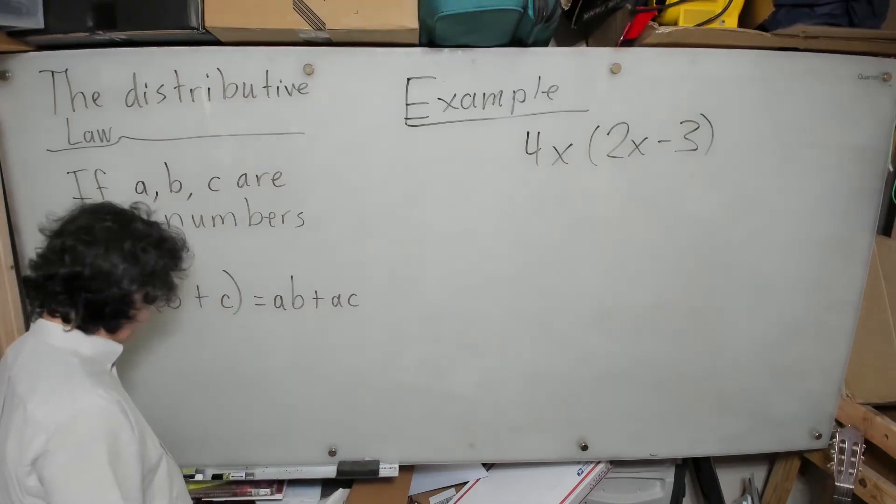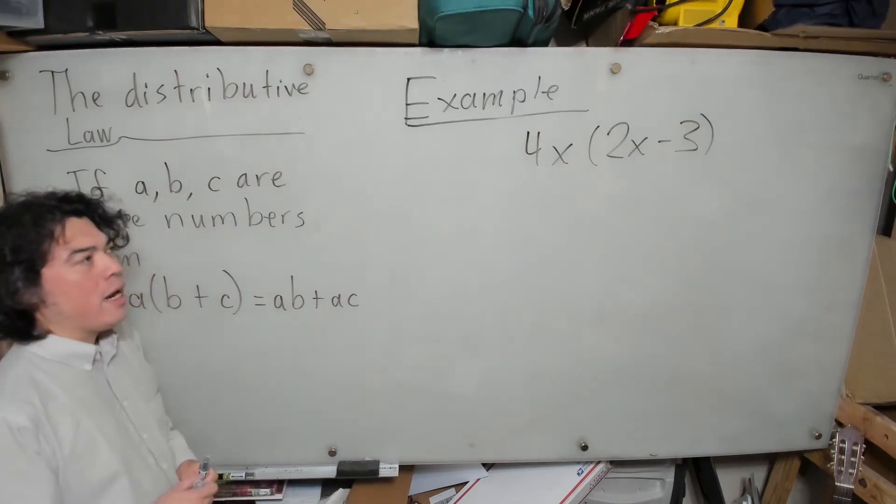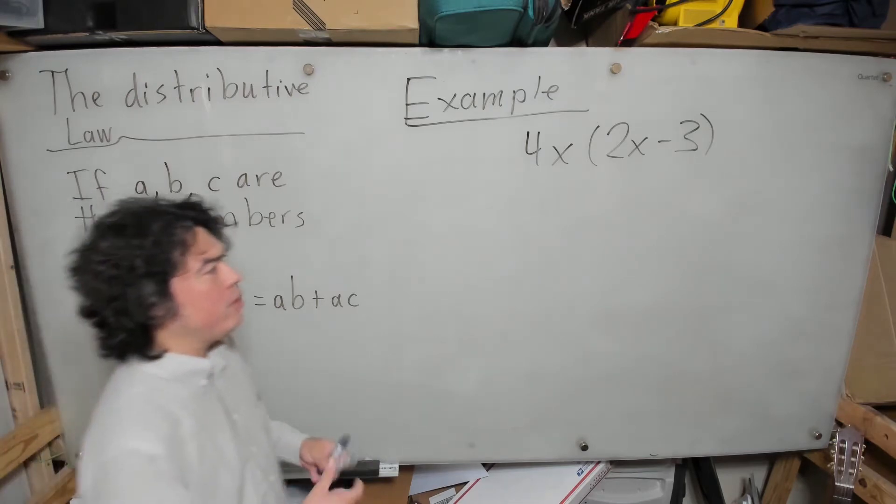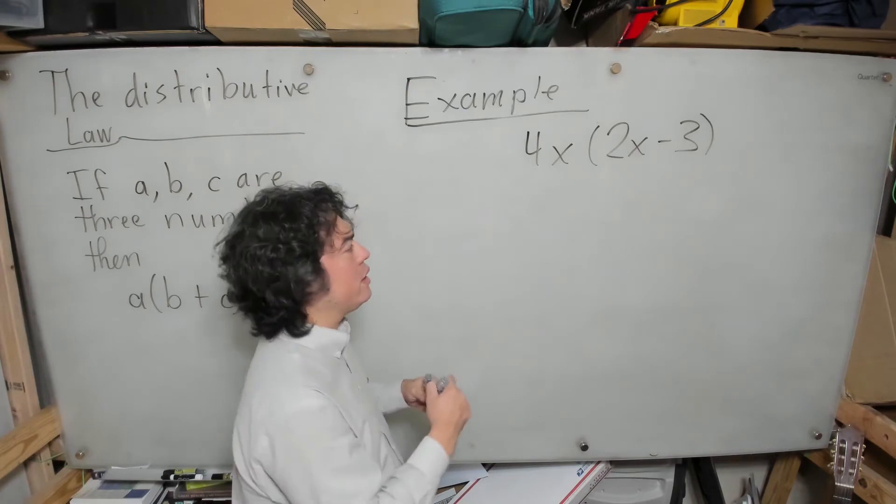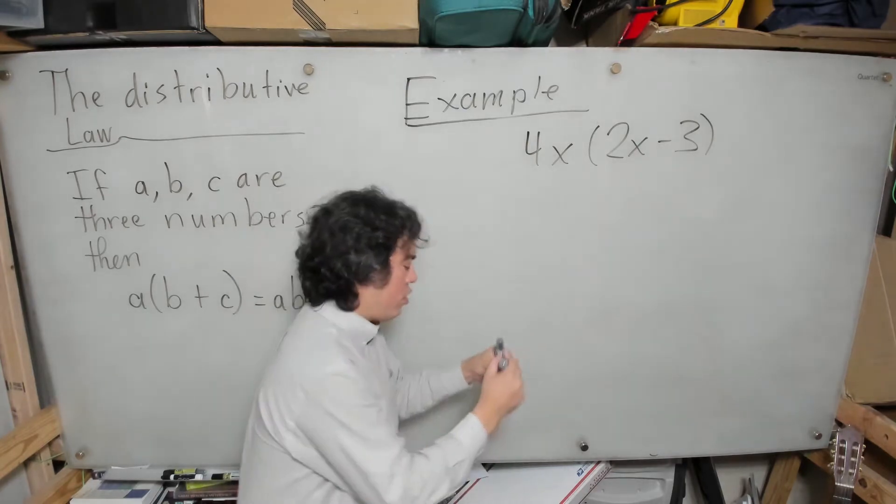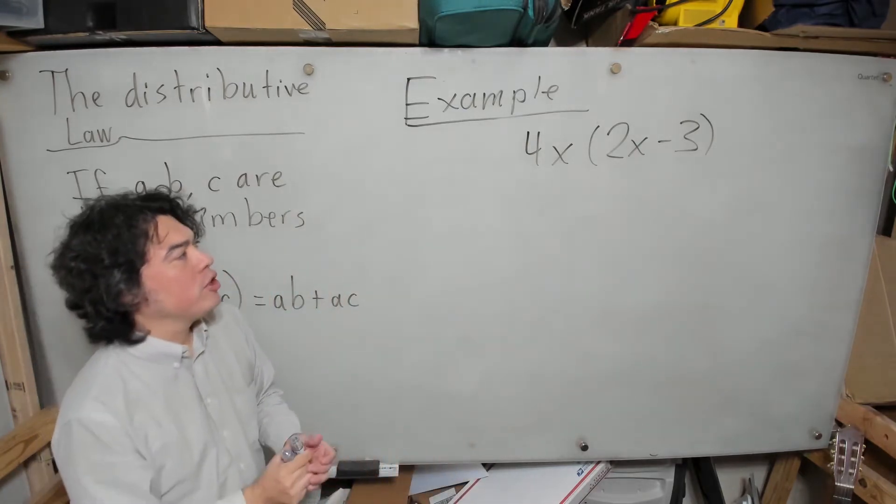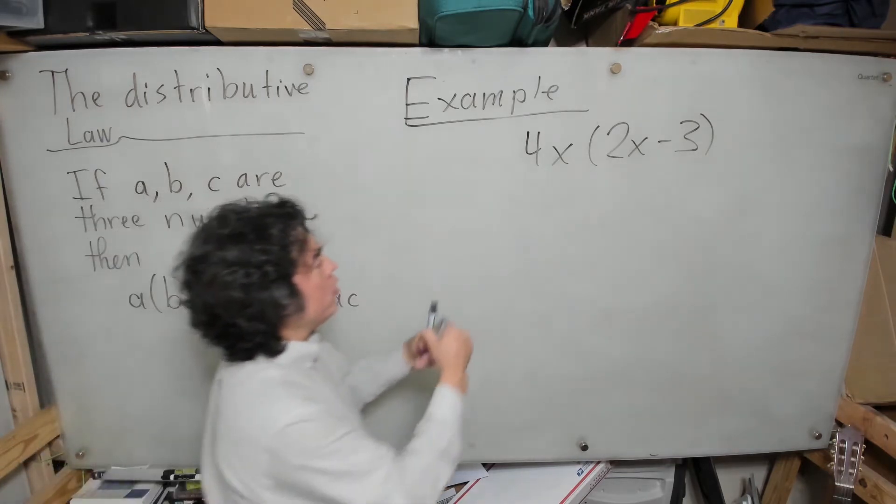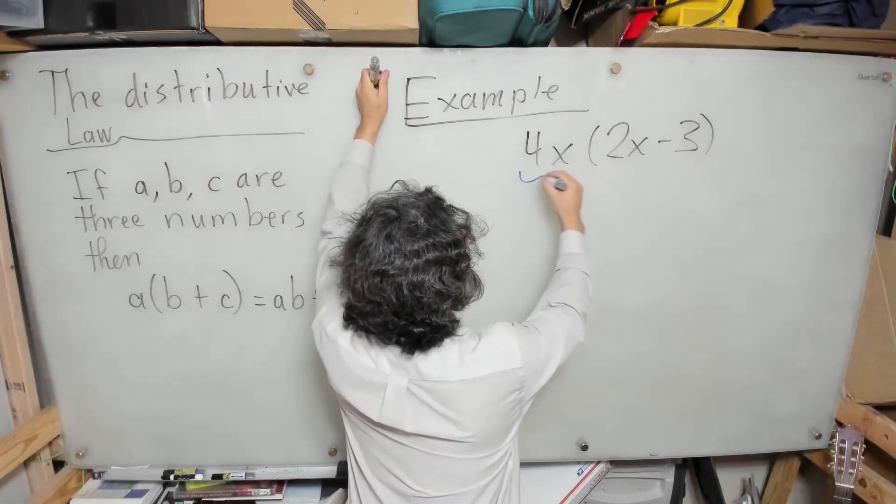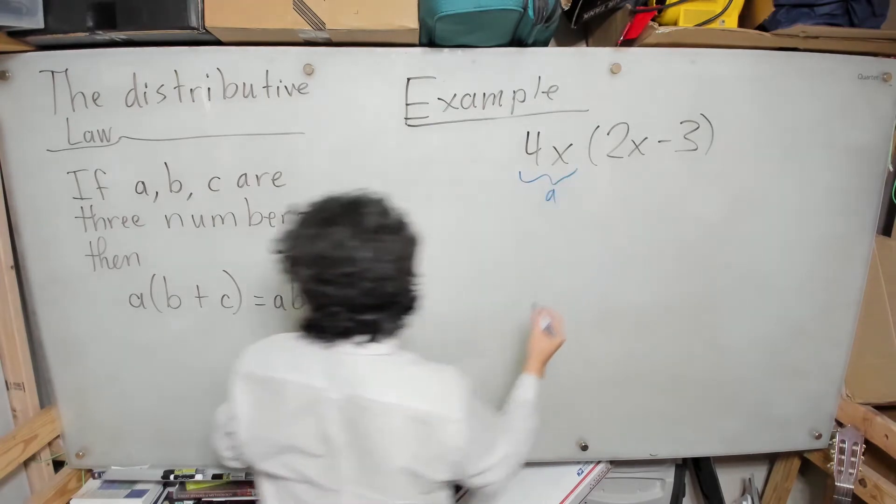Now I'm going to do this example. This is going to become an example that we're going to see a lot. The question is: how to simplify the expression 4x times (2x - 3)?